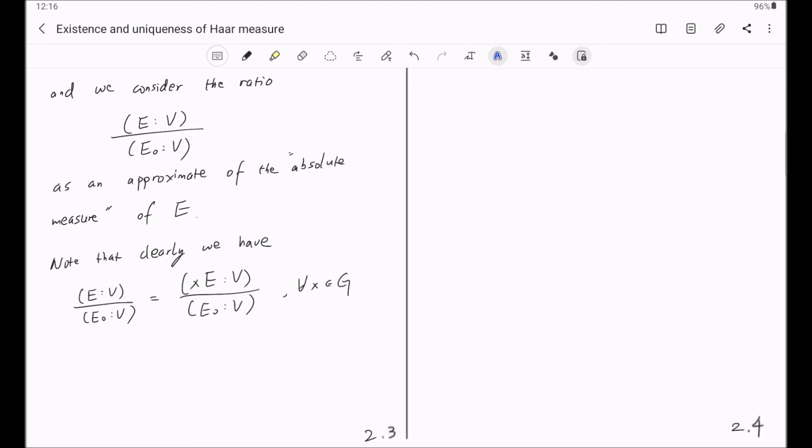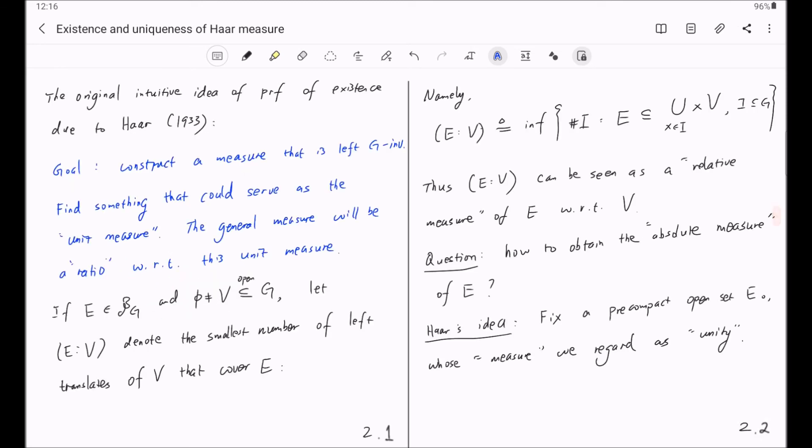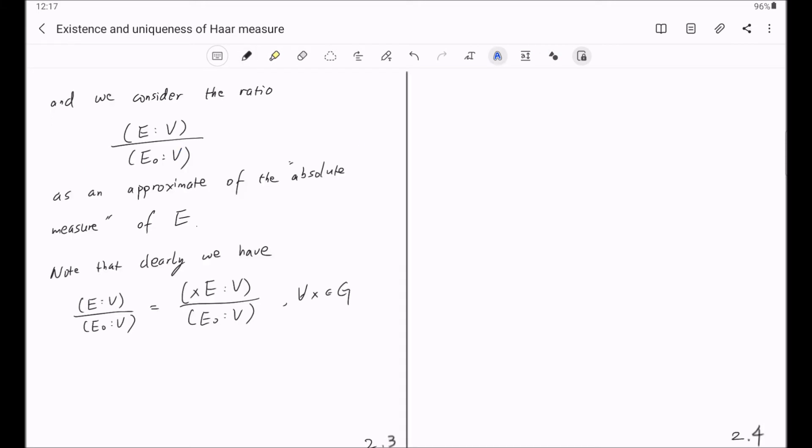This is simply due to the definition. Because in this definition, a left translation of E does not change the number of translates of V that could cover E. So this makes this approximate left G-invariant.